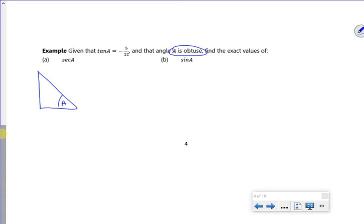I'm going to ignore the minus. So opposite is 5, adjacent is 12. That's a 5, 12, 13 triangle, isn't it? Right,